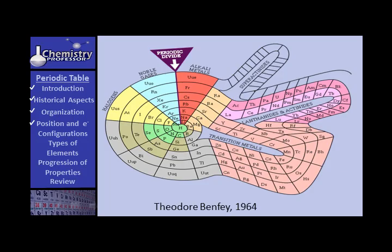Now here is one by Theodore Benvi that was done in 1964, starting with hydrogen in the very center of the spiral. And as you see, as you increase the length of the periods, that fits well with the fact that the spiral increases. A very, very interesting concept. You should go search the World Wide Web and look at some of these periodic tables. And more are coming out frequently.